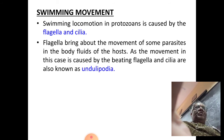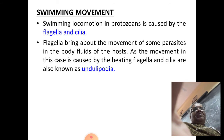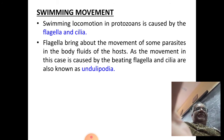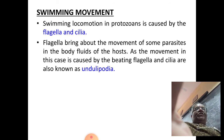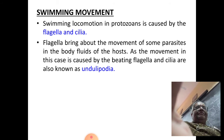The swimming locomotion in Protozoa is caused by two locomotory organelles: flagella and cilia. Flagella bring about the movement of some parasites in the body fluids — for example, Trypanosoma, which swims in the body fluids using a flagellum. As the movement in this case is caused by beating of flagella and cilia, especially in parasitic protozoans, they are also known as undulipodia — a hybrid name. In free-swimming protozoans, normally either flagella or cilia take care of locomotion.